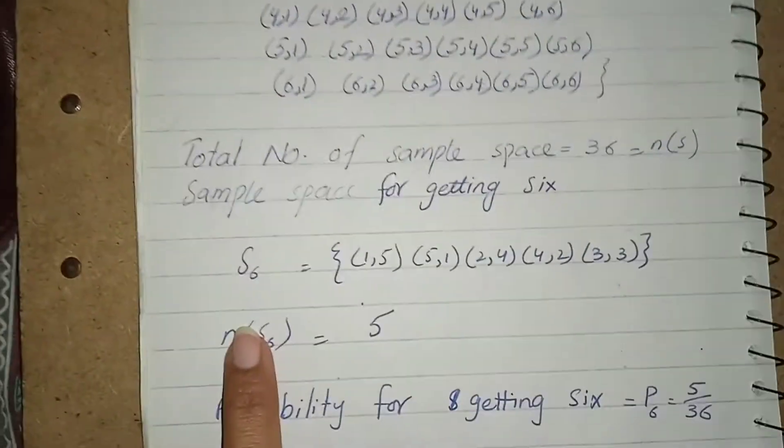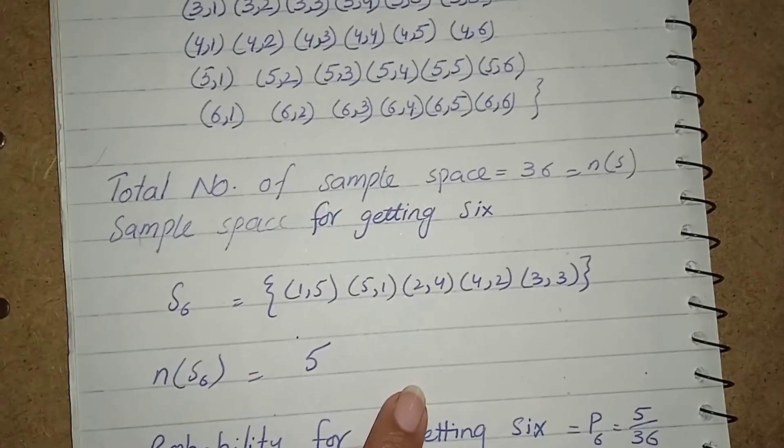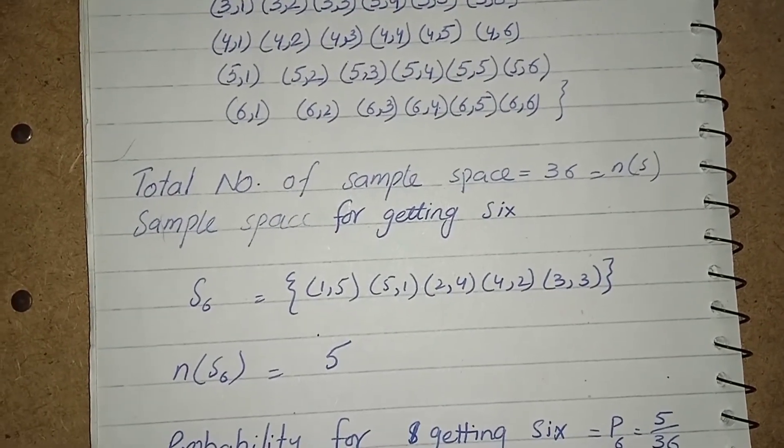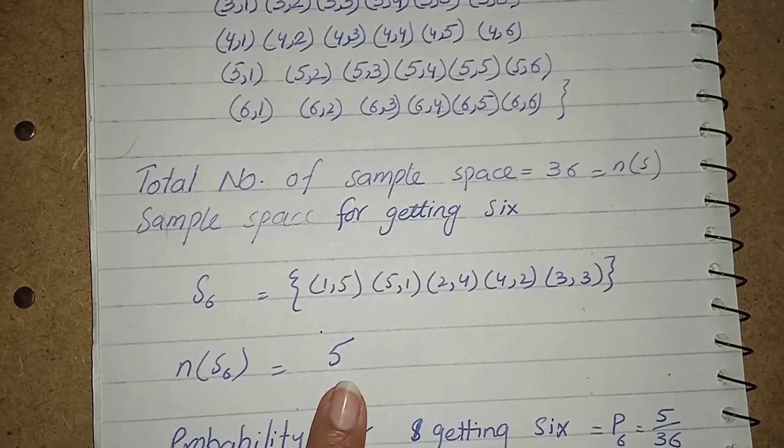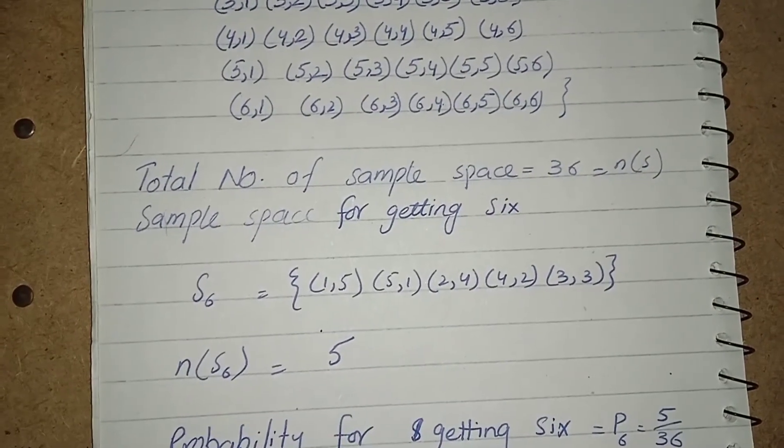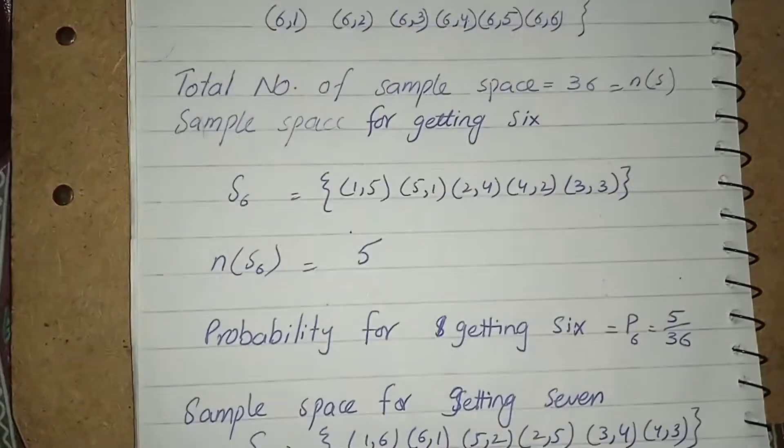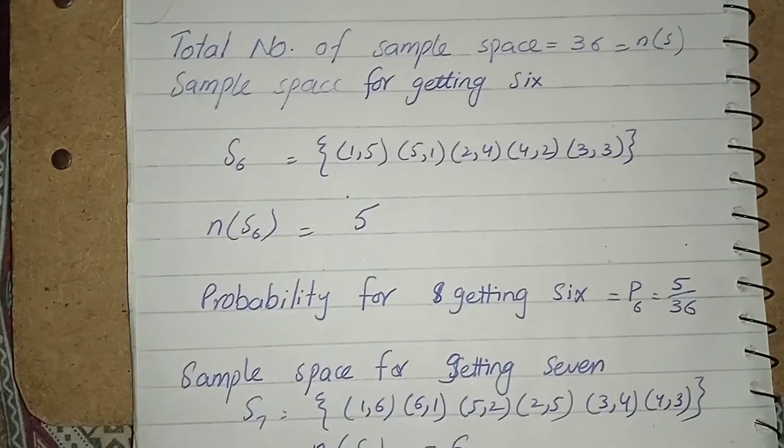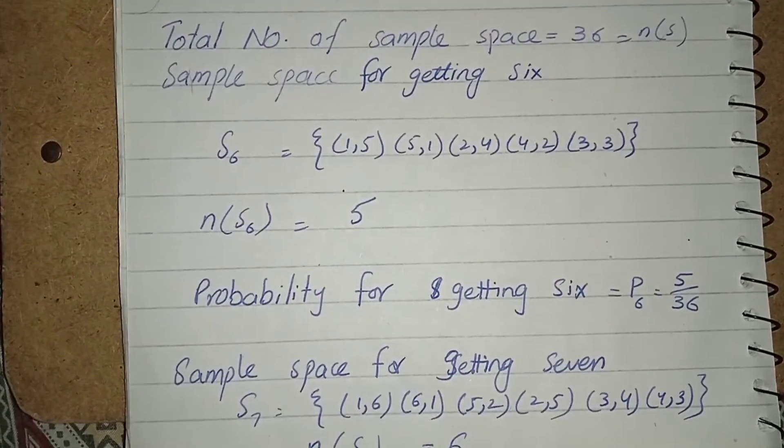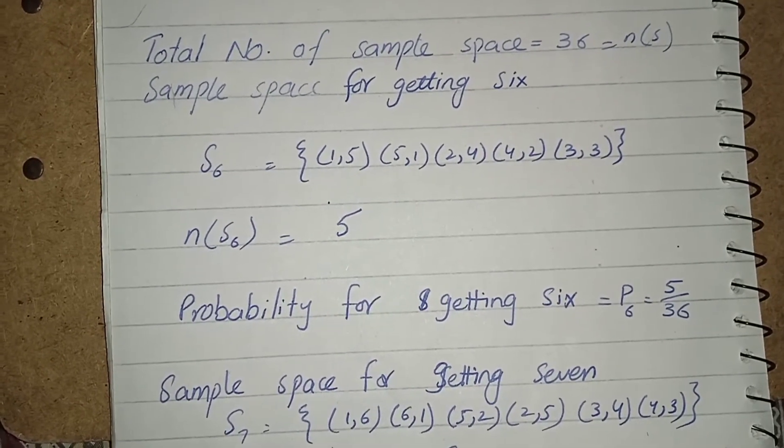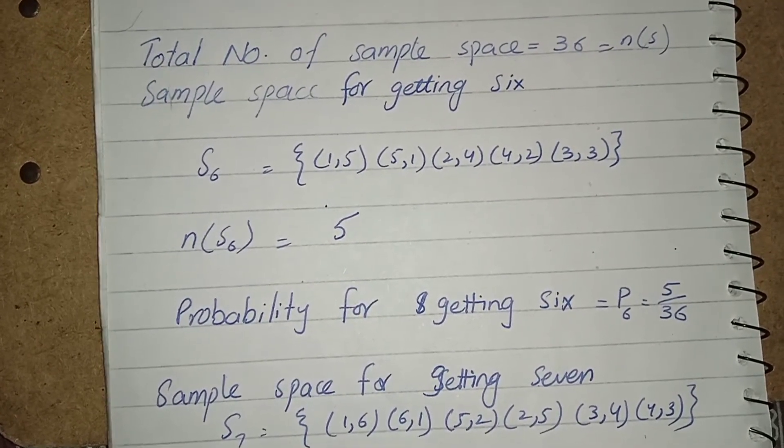After that I separate out all the sample spaces which is showing the output 6, and this time the number of the specific output 6 is 5, and the probability of getting 6 is 5 over 36. 5 is the probability of only getting 6 and 36 is the probability of all the sample spaces.